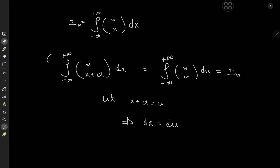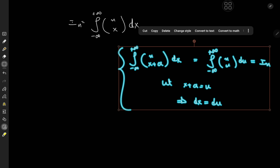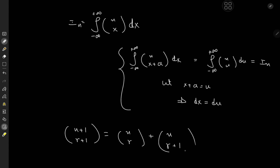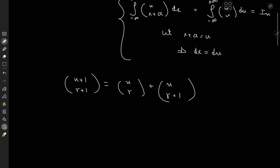We'll make use of this fact later. But first I'd like to recall a formula from elementary combinatorics — yes, exactly one of those formulae we never bothered to memorize since we always thought we'd derive it on the spot in the exam. That formula is: n+1 choose r+1 equals n choose r plus n choose r+1.